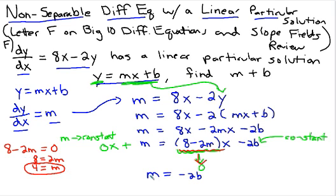And if I know that m equals 4, and I also know that m equals negative 2b, then I can take the fact that m equals 4 and put it into here. And I have that 4 equals negative 2b. So b has to equal negative 2.